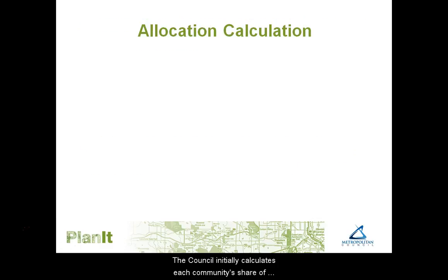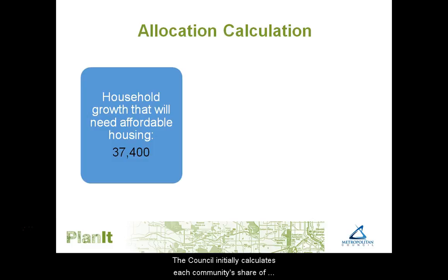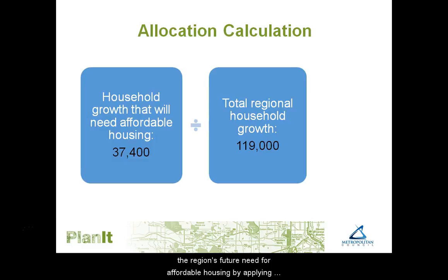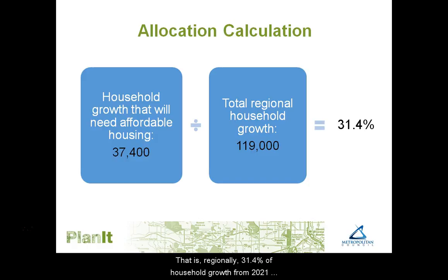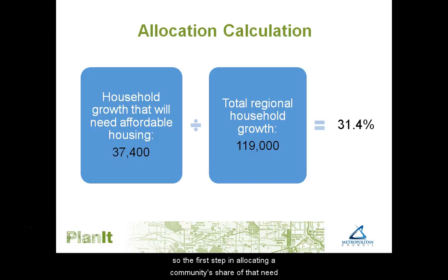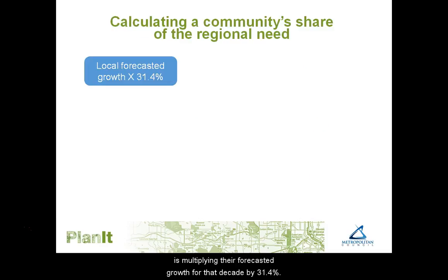The Council initially calculates each community's share of the region's future need for affordable housing by applying the same proportion of regional growth in affordable housing need to each community. Regionally, 31.4% of household growth from 2021 to 2030 will be in need of affordable housing, so the first step in allocating a community's share of that need is multiplying their forecasted growth for that decade by 31.4%.